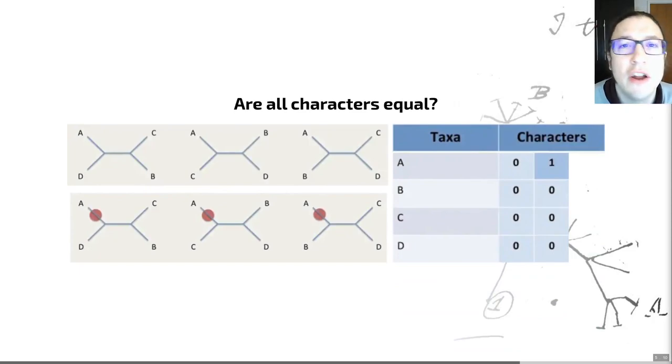That brings us to an idea of character informativeness. So a good character is one that records homology. This is the concept that we've already met in video number three. Here are two examples of not so useful characters. In character, well, I guess character one, the one here showing us all zeros, if we map that onto all of the potential trees of these four taxa, we find out that because these are all zeros, there are no changes in character on that tree. It tells us nothing about the interrelationships of these organisms.